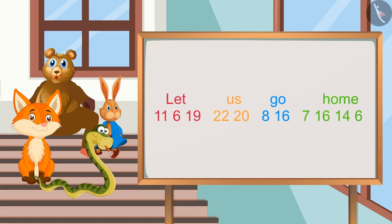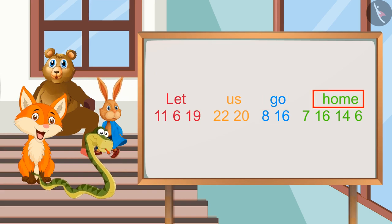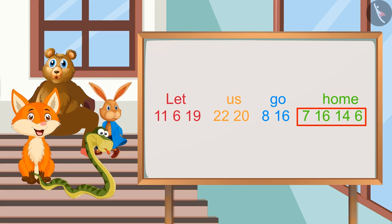Yes, this is the order of Bholu. Let will be 11, 6 and 19. Us will be 22 and 20. Go will be 8 and 16. Home will be 7, 16, 14 and 6.